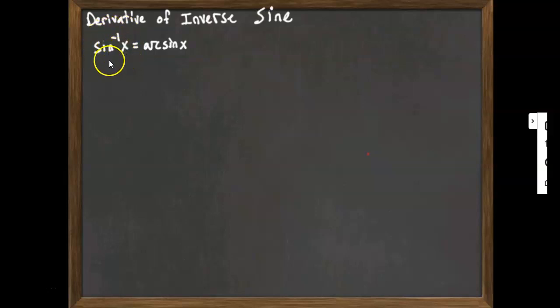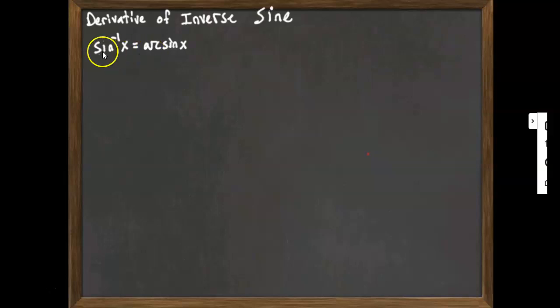Sine to the minus 1 is a notation for inverse. That is not sine raised to the minus first power. Sine raised to the minus first power would be 1 over sine, which would be cosecant. This is not talking about the cosecant function — this is the inverse sine, or the arc sine.